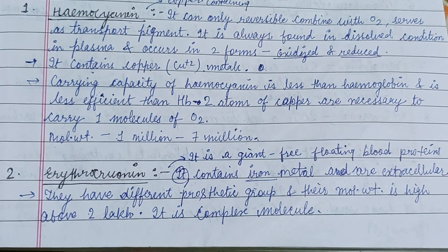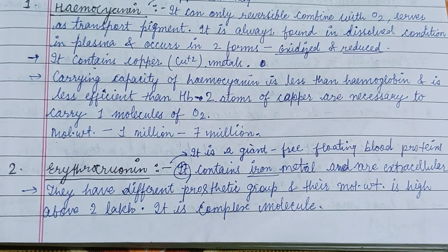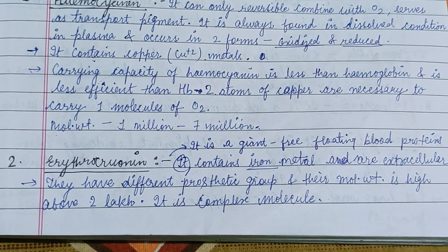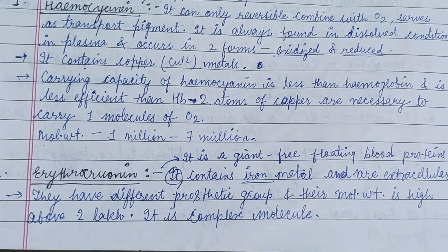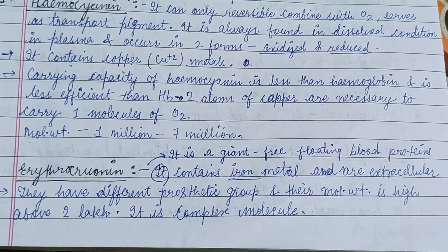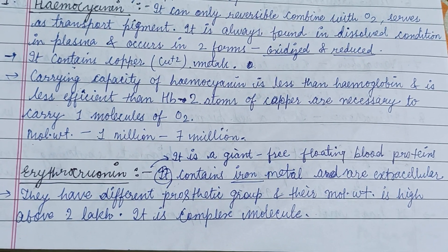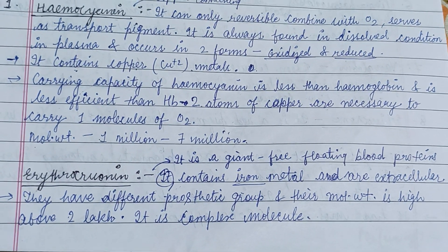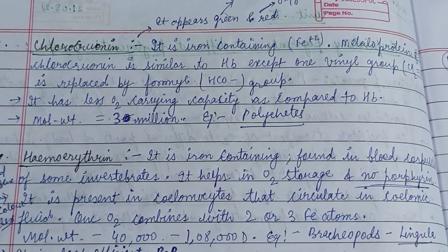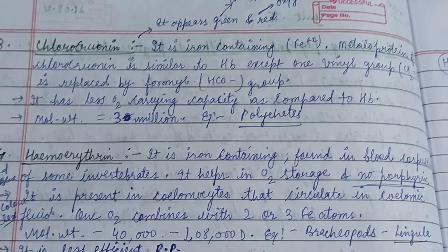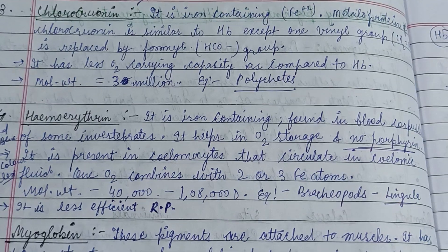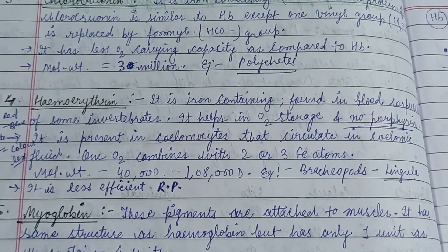and are always found in dissolved condition in the plasma. Hemocyanin occurs in two forms: oxidized and reduced. The next one is erythrocruorin — it is a giant free-floating blood protein containing iron metal.